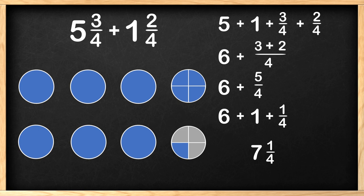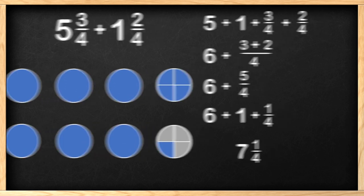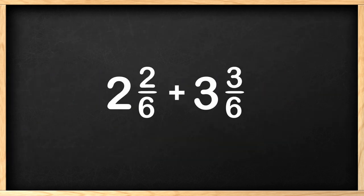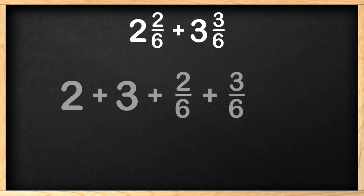Are you ready to try a problem without using pictures to help us solve it? Great! Let's try it! The problem is 2 and 2 sixths plus 3 and 3 sixths. That's a mouthful. We need to rewrite the mixed numbers by showing addition of the whole numbers and addition of the fractions. Okay, now we add the whole numbers first. 2 plus 3 is 5.